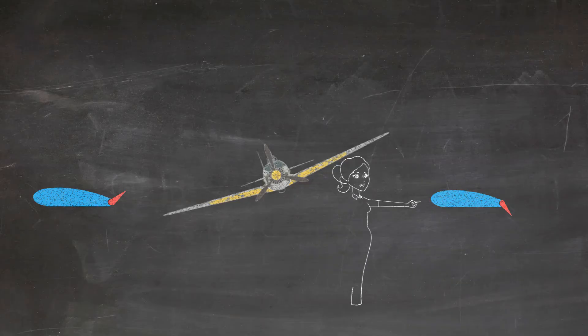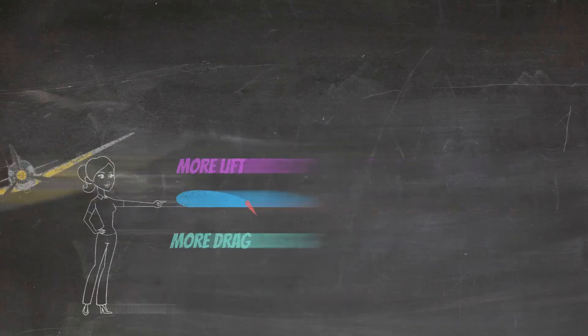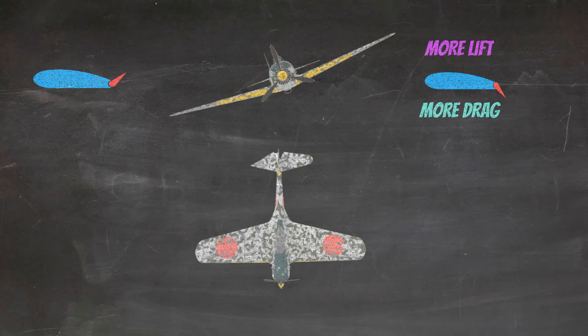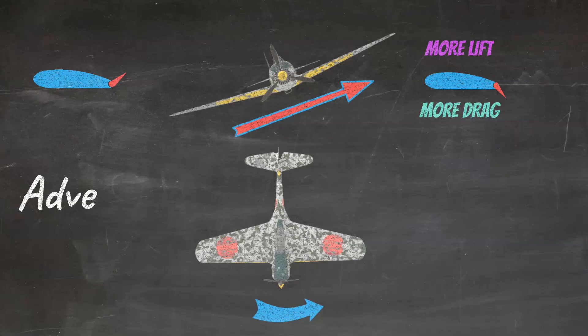When we roll or bank our airplane, not only will that lowered aileron produce more lift, but it will also produce more drag. This will make our airplane yaw in the direction of that lowered aileron. When this happens, the nose of the airplane tries to point itself away from the airplane's direction of travel. We call this adverse yaw.